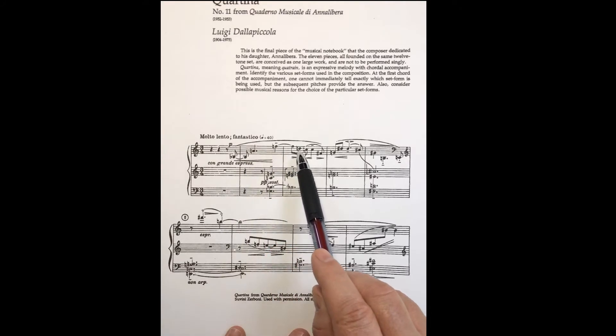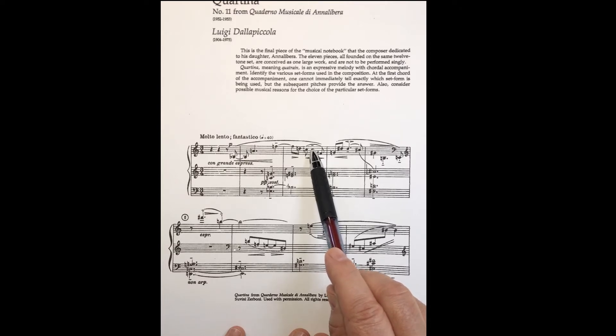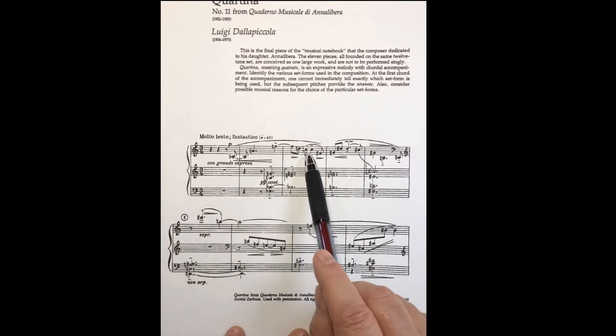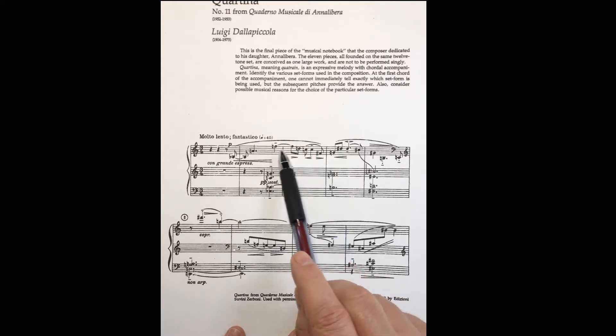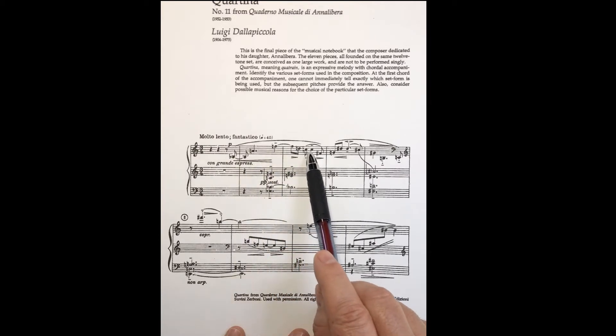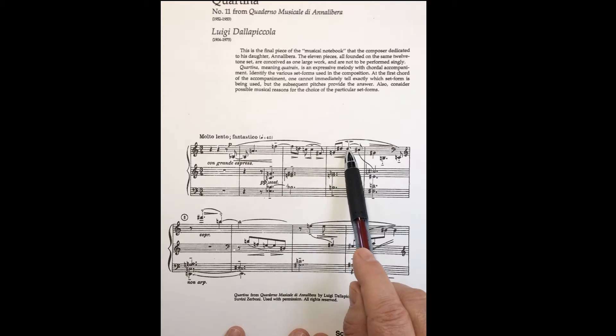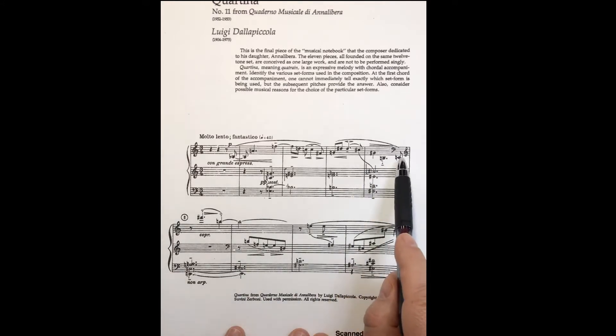So let me take a look and see if we find 12 distinct pitch classes: B-flat, A, F, D, C, then another C. But this C isn't considered a new pitch class yet because there hasn't been another pitch class presented between them. So we will see this often where we have a repeated note in the series. As long as there's not an intervening pitch, like if it was C, F-sharp, C, that would present a different scenario. But C, C is just the same pitch class being repeated before we enter a new pitch, which is perfectly fine. So we have B-flat, A, F, D, C, F-sharp, G, D-sharp repeated, C-sharp, G-sharp, B, and E.